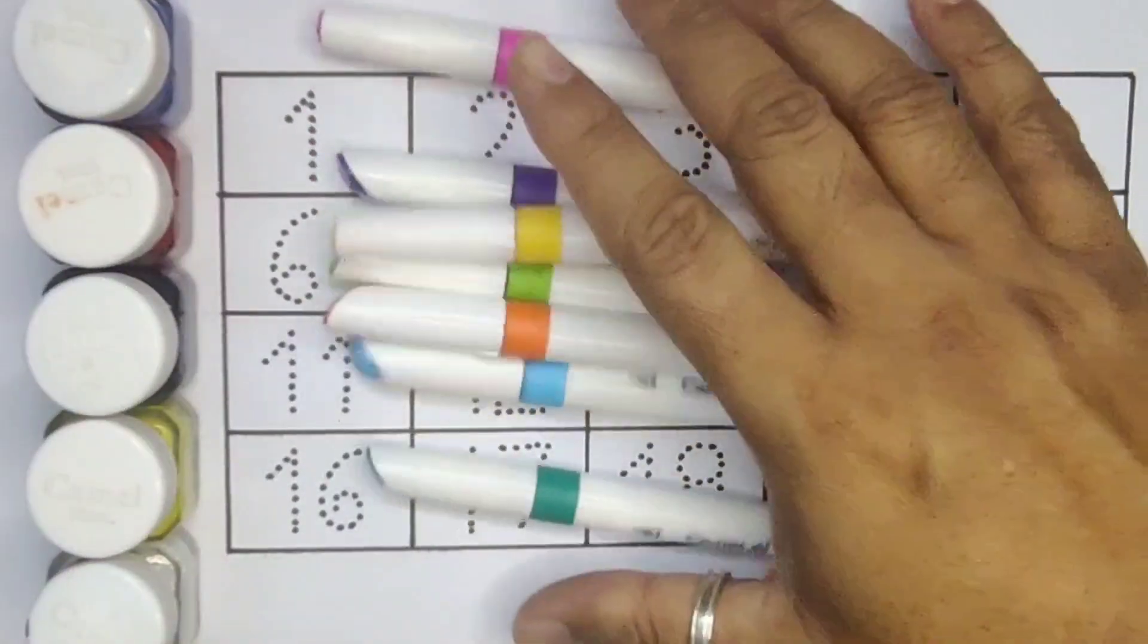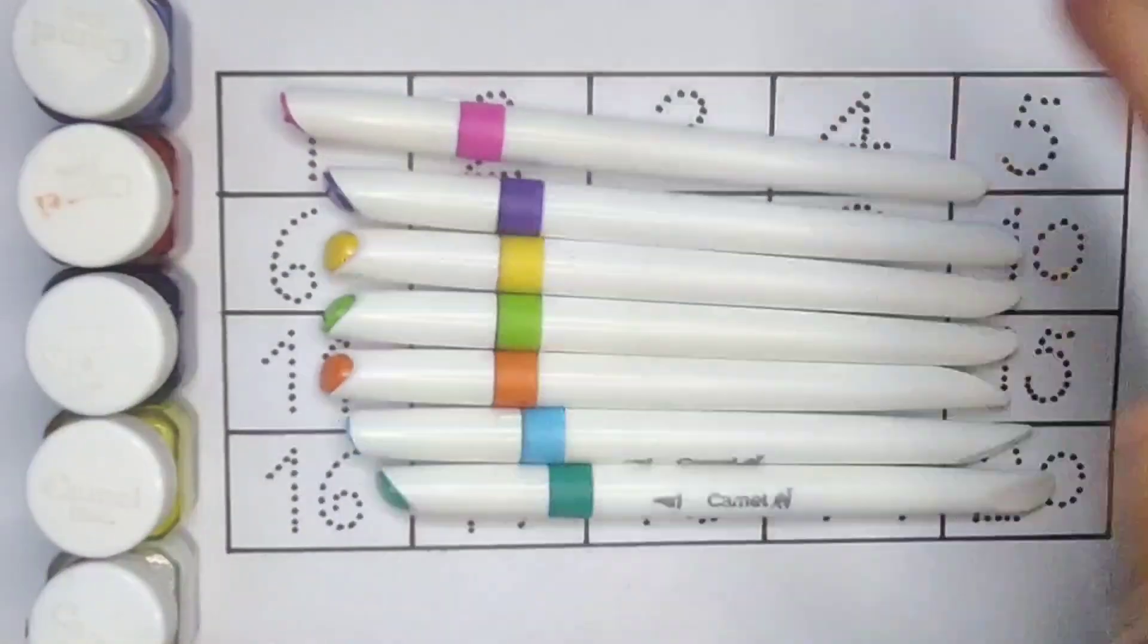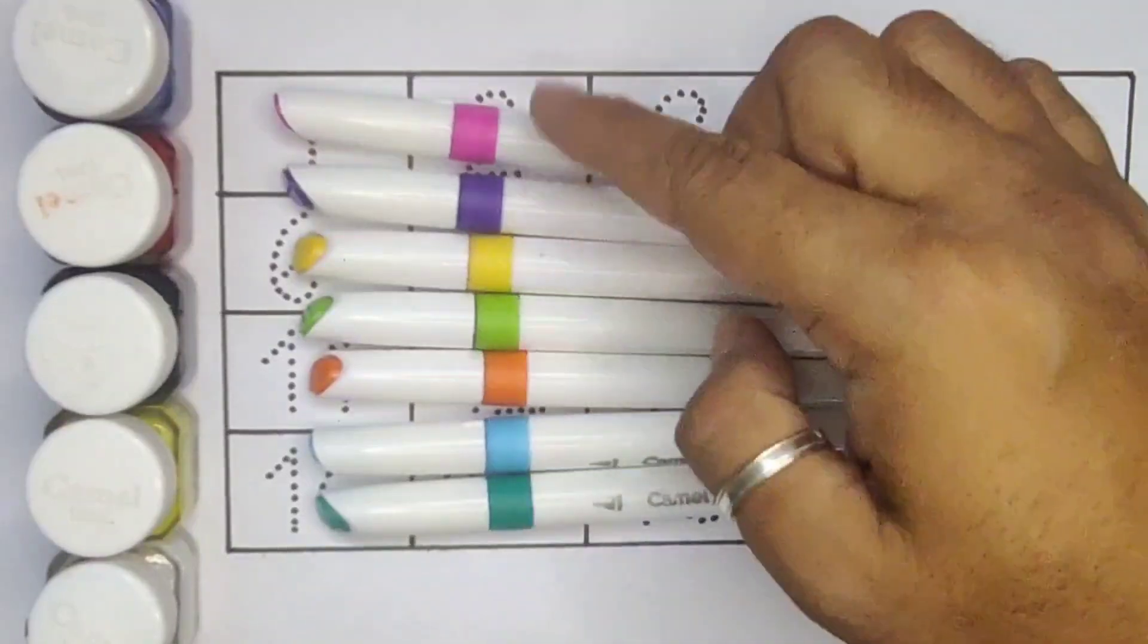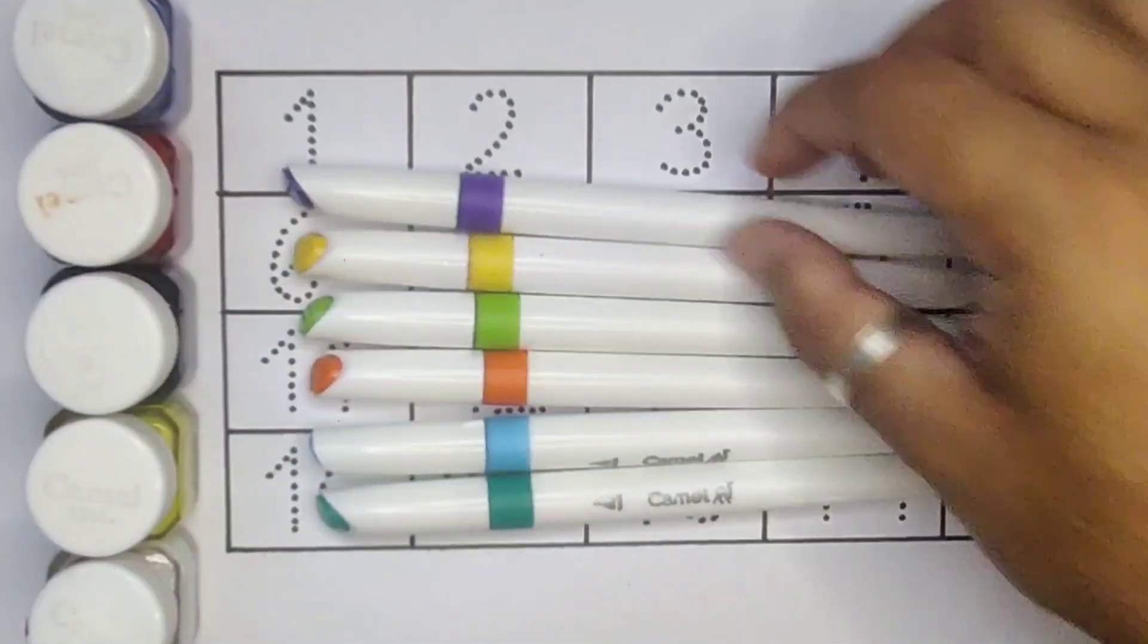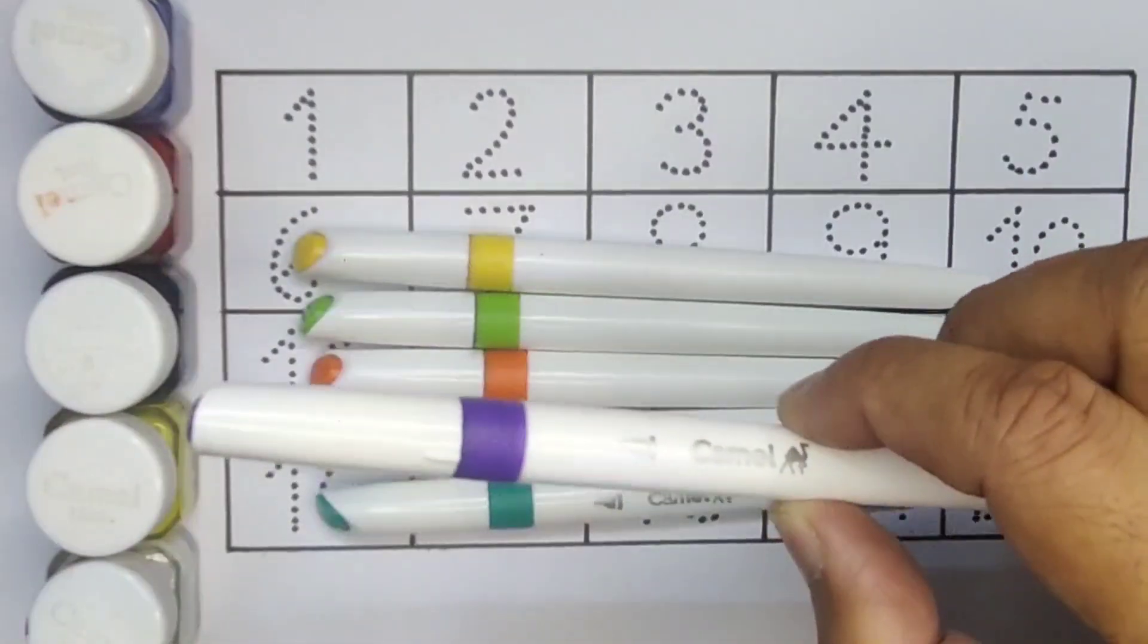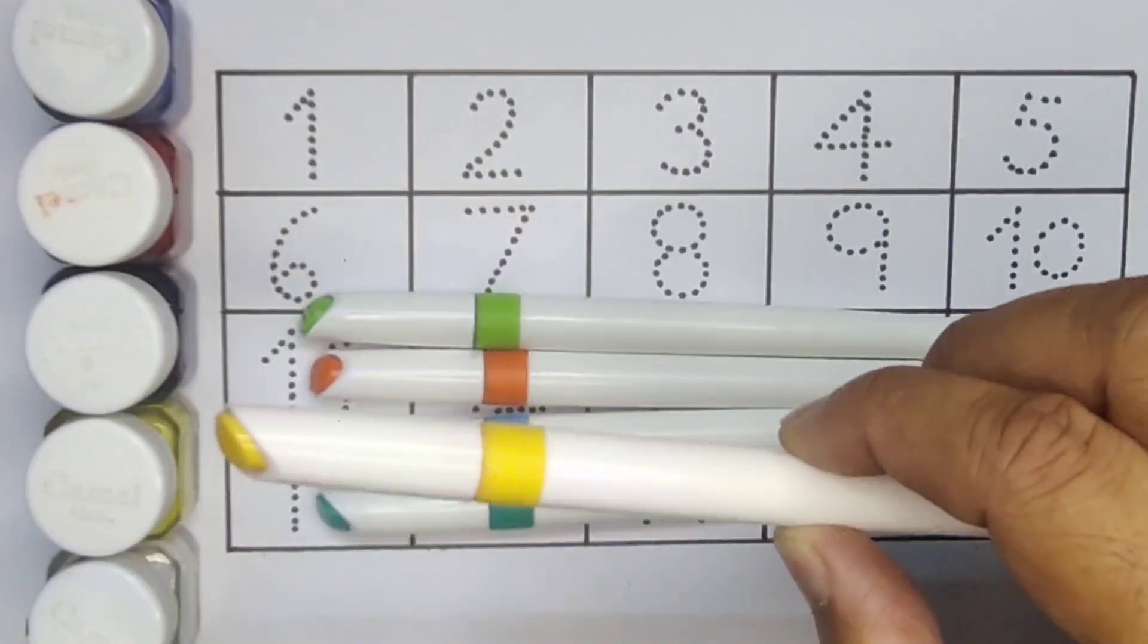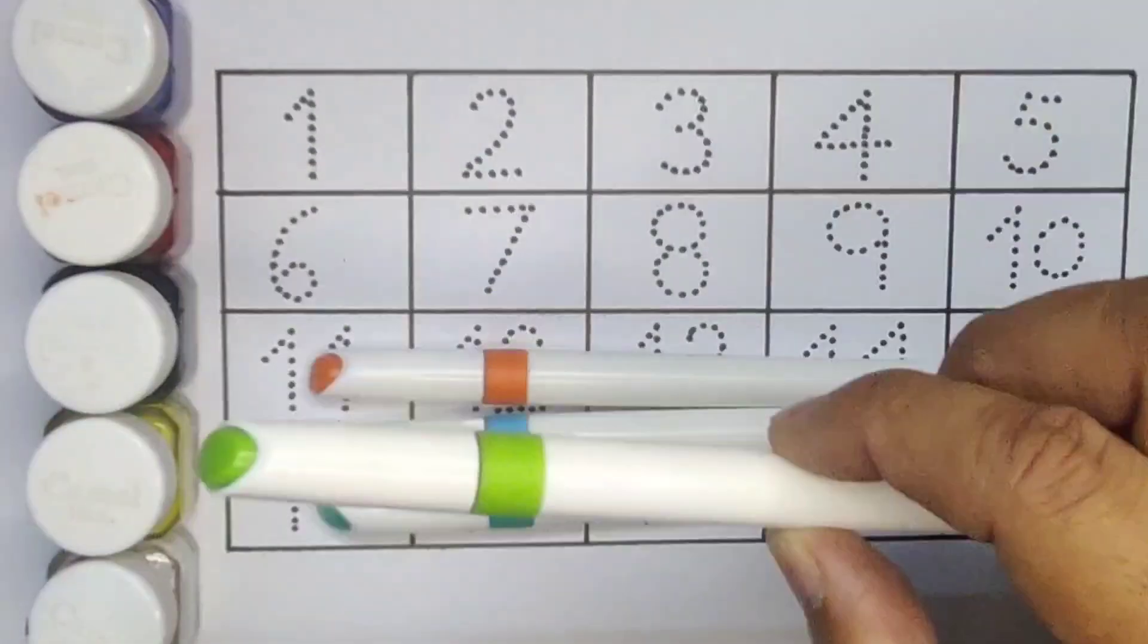Hello kids, welcome to my new video. First we're going to know the color's names: pink color, purple color, yellow color, light green color.